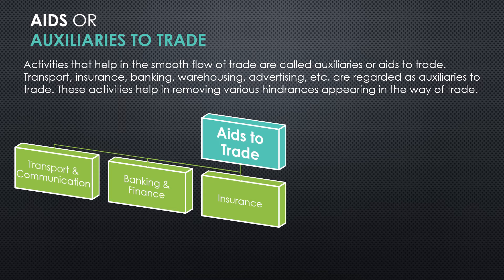The next aid is insurance. Risk is a very important element in business, and it is covered by insurance. There are many types of insurance available — it can cover risk due to fire, theft, or accident. Insurance companies provide protection to businesses from the risk of different kinds of accidents. For this, the businessman pays a nominal amount called a premium and receives assurance of compensation if any accident takes place.